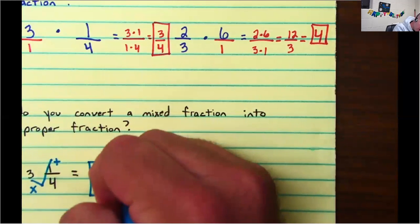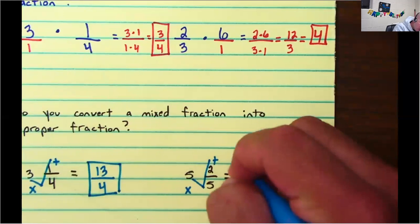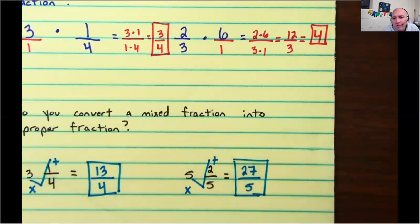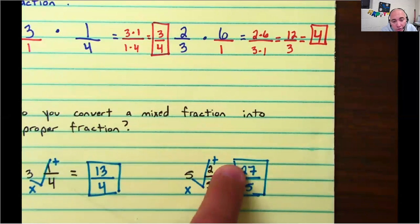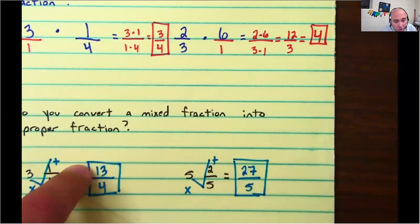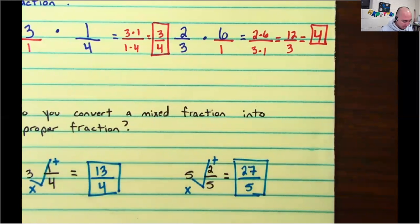Mr. Noland, what's an improper fraction? An improper fraction is when your numerator is larger than your denominator. Again, top number is larger than the bottom number.